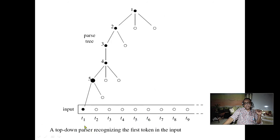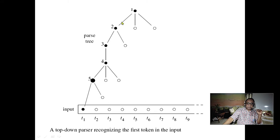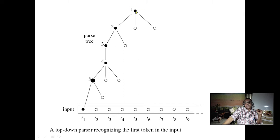In top-down parsing, the parser first visits the root, then goes to the left child, then further left — depth-first, pre-order. The root is visited first, matching terminals as it descends. When a terminal matches, it proceeds to match the next; otherwise it backtracks. This is the basic mechanism of top-down parsing: pre-order, depth-first, checking and matching rules.